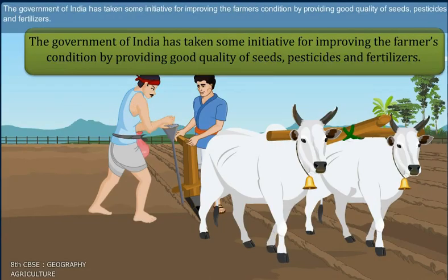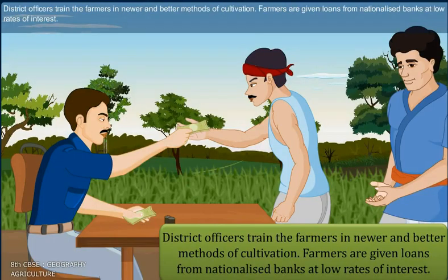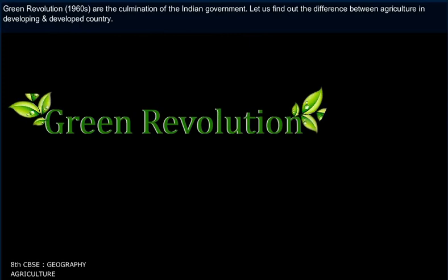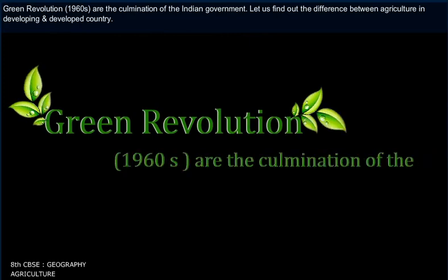The government of India has taken initiatives to improve farmers' conditions by providing good quality seeds, pesticides, and fertilizers. District officers train farmers in newer and better methods of cultivation. Farmers are given loans from nationalized banks at a low rate of interest. The Green Revolution of the 1960s was a major achievement of the Indian government.